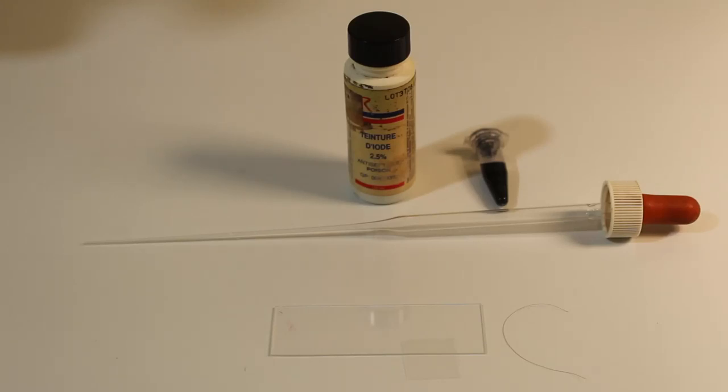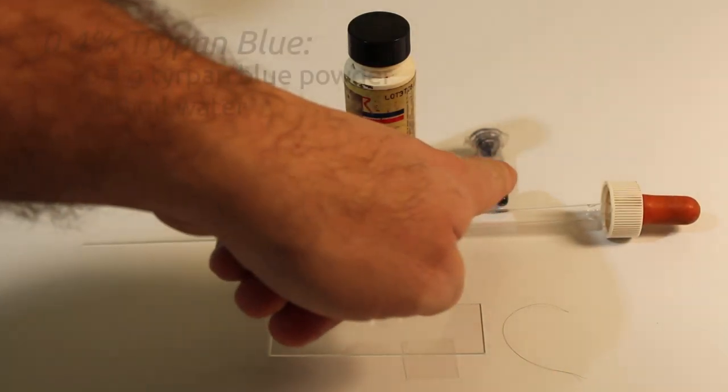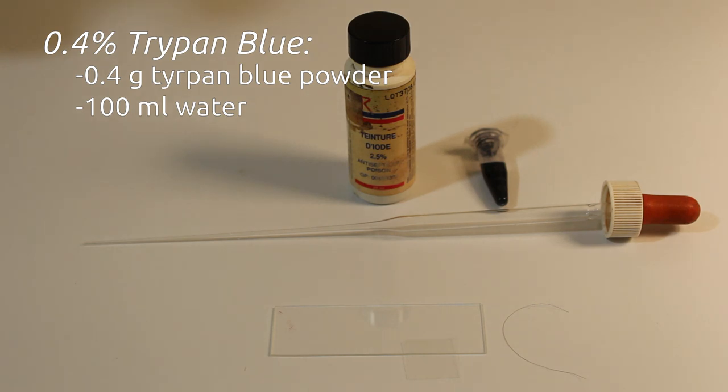For viability staining, you're going to need a solution of Trypan Blue. You can generally buy this as a pre-made solution, that's 0.4% Trypan Blue in water. You can also buy the powder and make your own 0.4% solution, but make sure you're using distilled water, not tap water, as the chlorine in tap water can kill yeast and will give you a false reading.